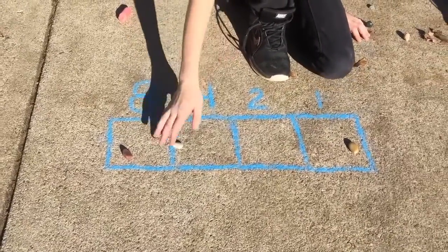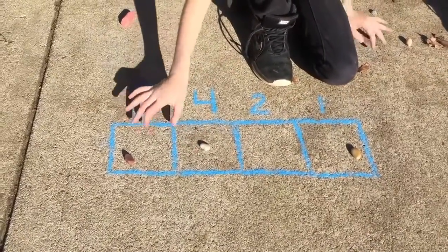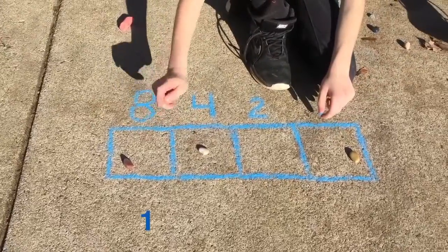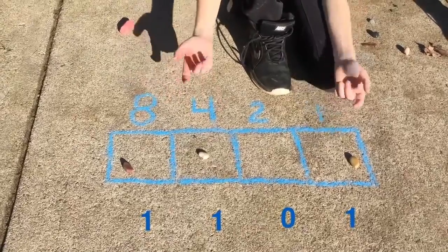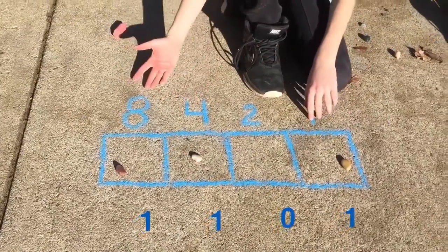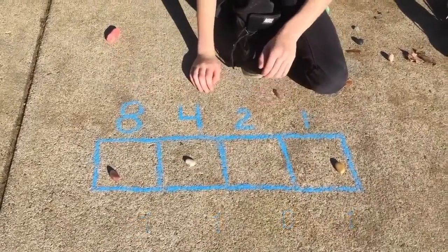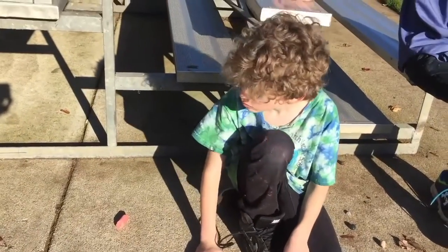So what does that mean? Thirteen is this: one, one, zero, one. So one plus four plus eight is thirteen. Five plus eight is thirteen. Nice job.